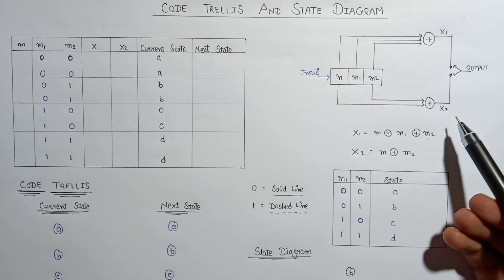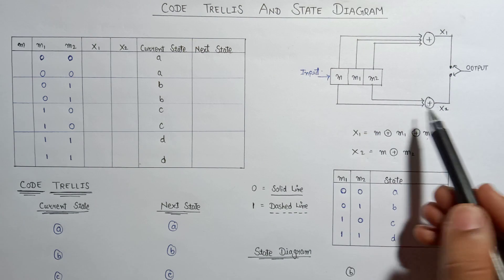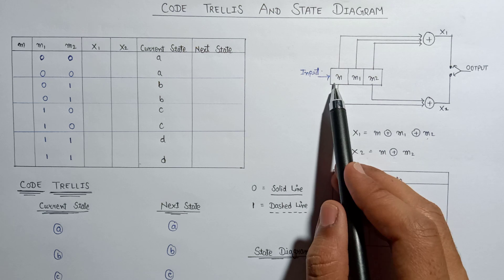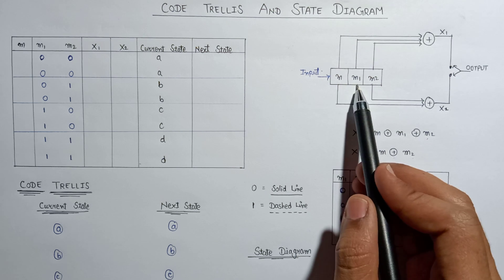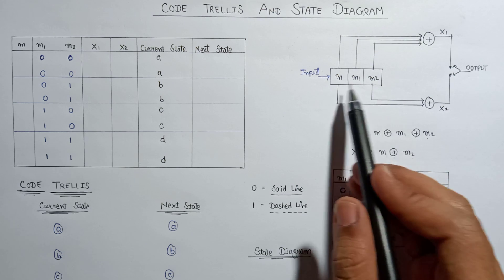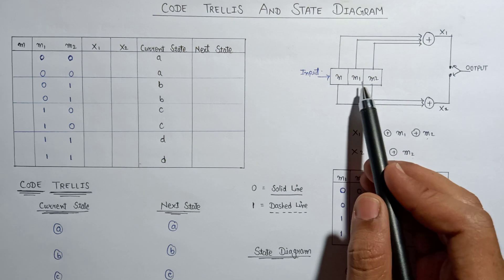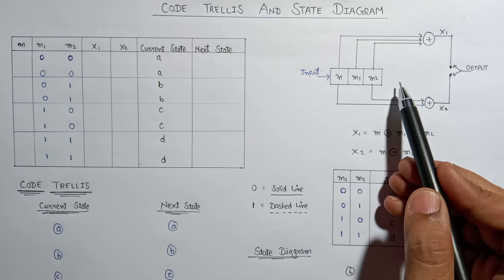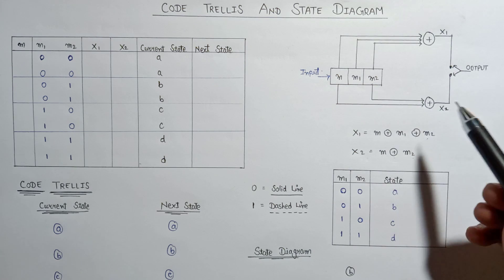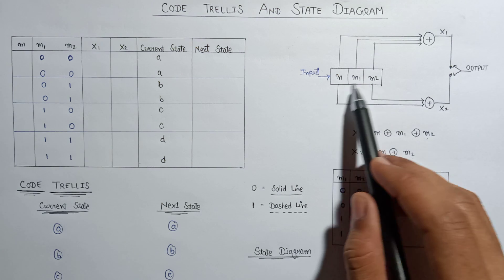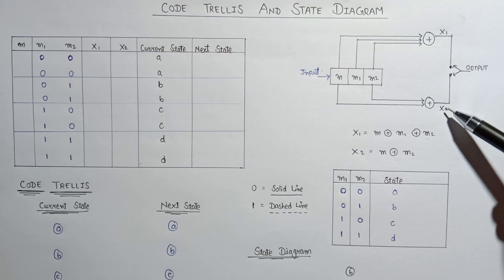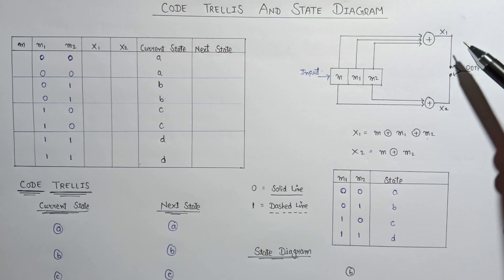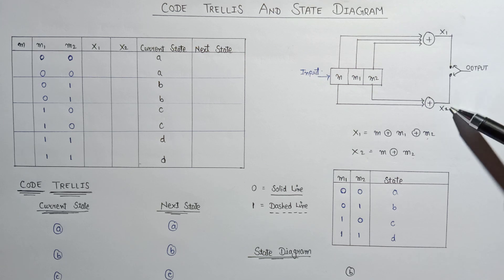This is the encoder that we discussed in our earlier lecture. Here we apply the input and these are the three message bits named as m, m1, and m2, where m is a current message bit and m1 and m2 are representing the previous two message bits. On the basis of the input and these three message bits, we will get our encoded output named as x1 and x2, and finally we will get our final output.